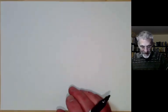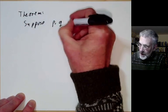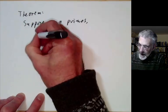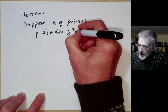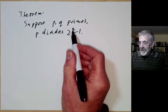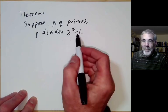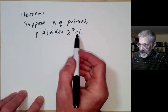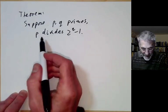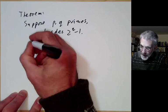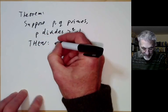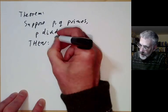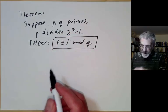Now let's have some applications. Suppose p and q are primes and suppose p divides 2 to the q minus 1. We might be checking whether 2 to the q minus 1 is prime and testing all primes less than it to see if they divide it. Well, if p does divide 2 to the q minus 1, this puts a condition on p: then p must be congruent to 1 modulo q.